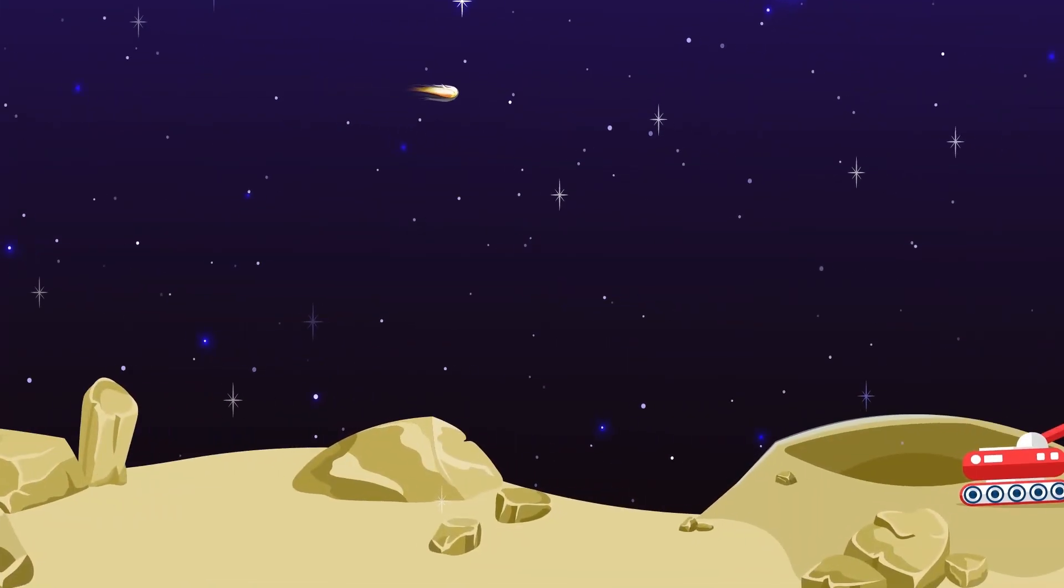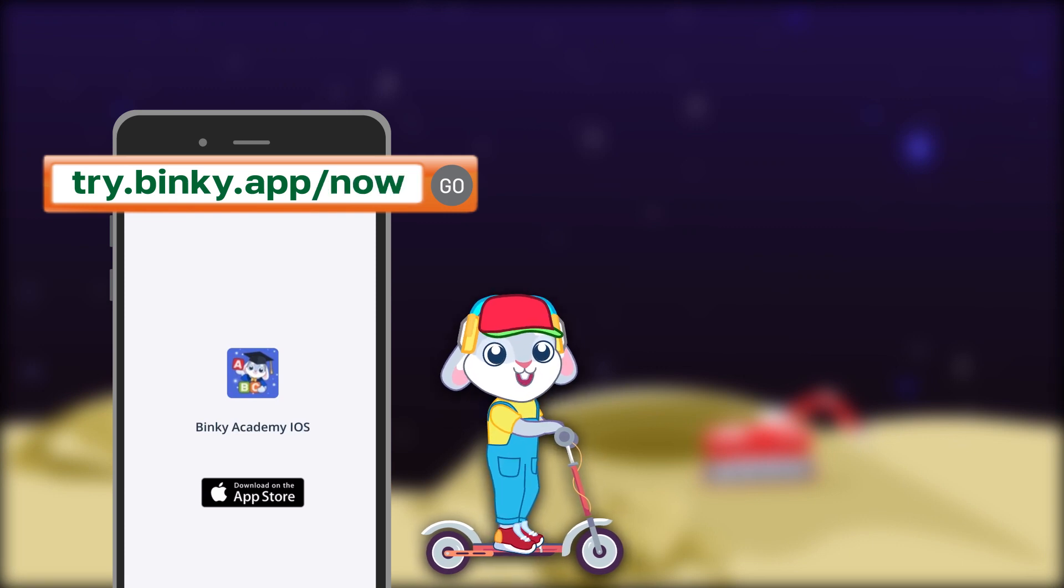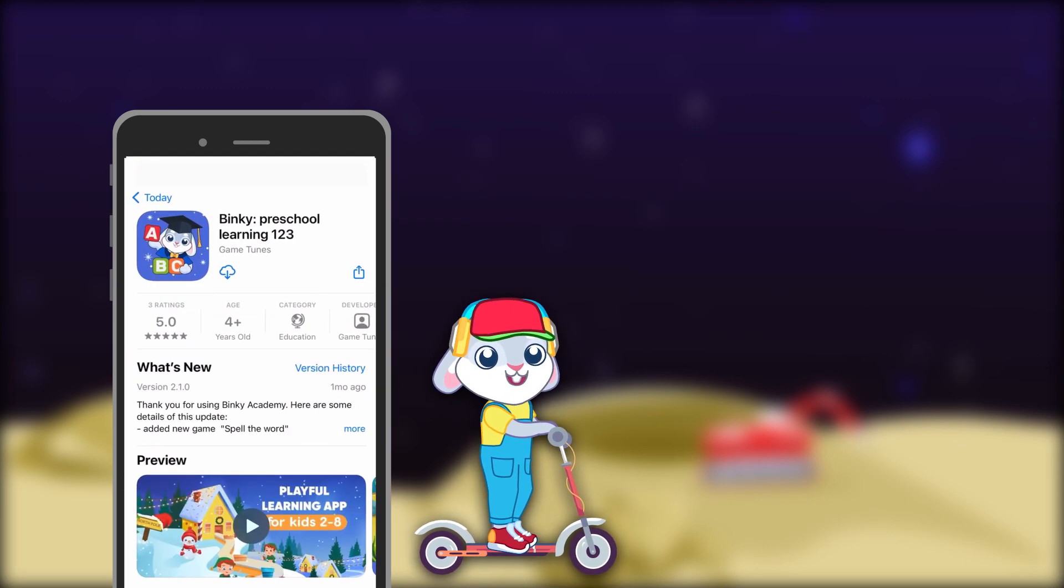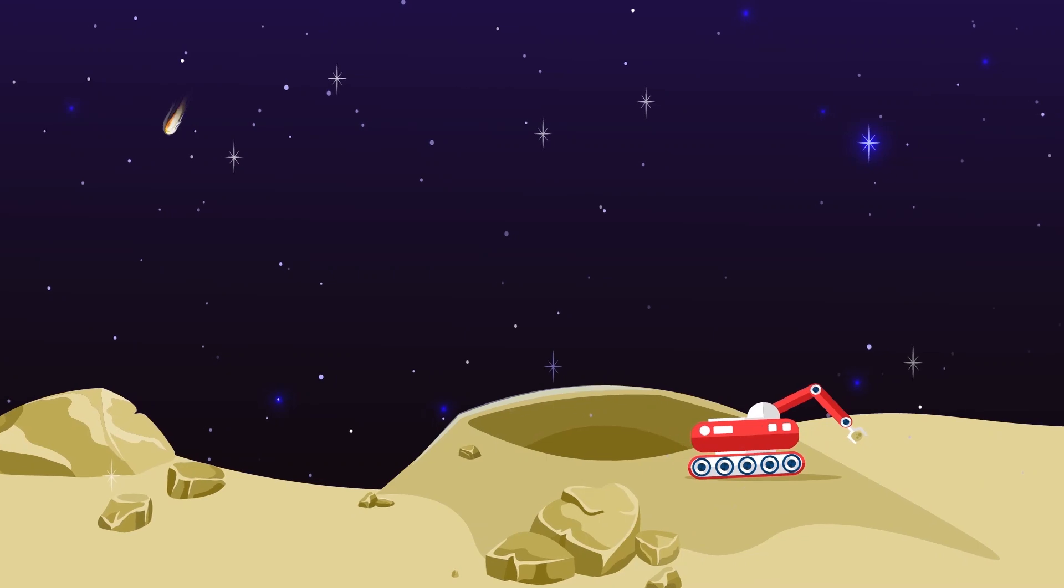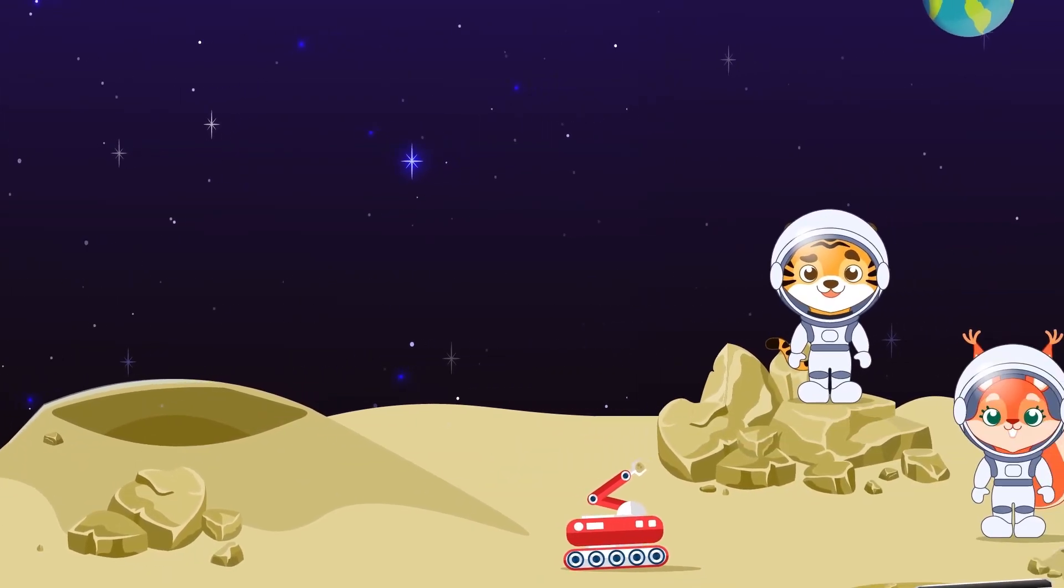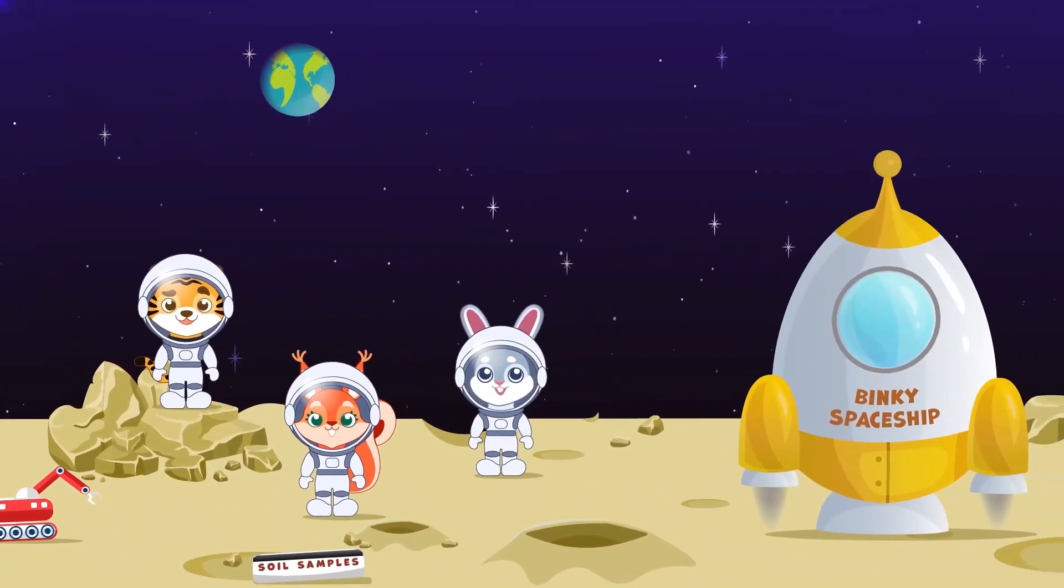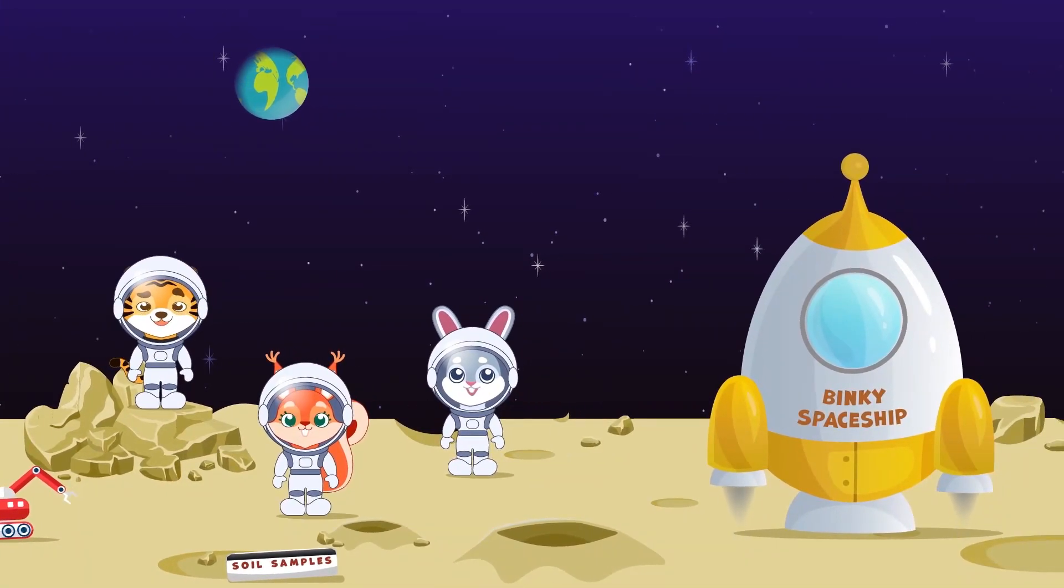Their first stop is the moon. Find more songs and learning games for preschoolers in the Binky app. Anyone can recognize its surface as it is covered with many craters that were formed when asteroids or comets collided with the moon's surface.